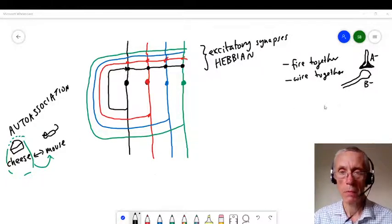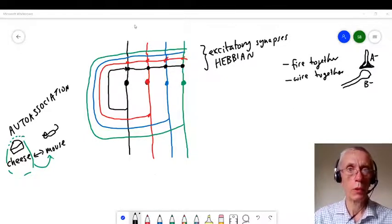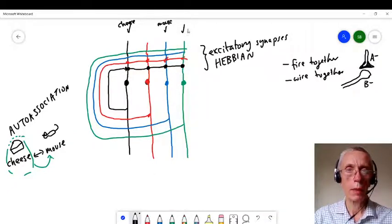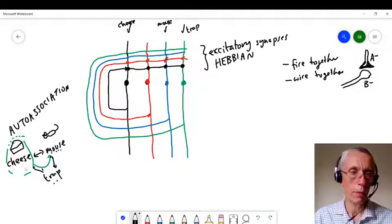Now, we've actually now got enough to form a memory. So let's say I want to associate firing in this one, and this one, and this one. Right, so this is a bit like cheese, this is mouse, and this might be a trap. Okay, so I want to associate these three things together. So when I pick up a couple of these cues, it will automatically remind me of the other one.